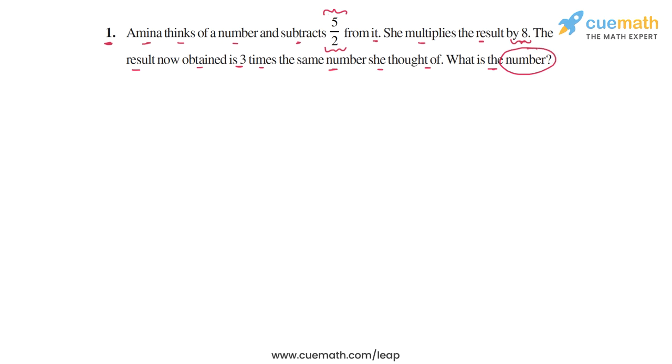So let's start by assuming that the number we want to find is x. Assume that the number Amina thinks of is equal to x. Now, what is Amina doing with x? First, she subtracts 5 by 2 from x. So she takes x and she subtracts 5 by 2 from this number, then she multiplies the result by 8.